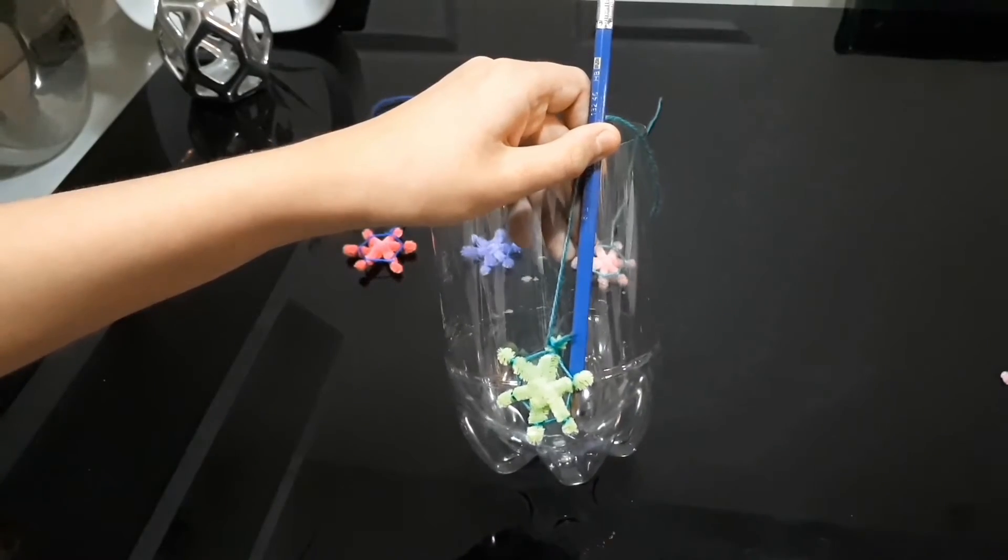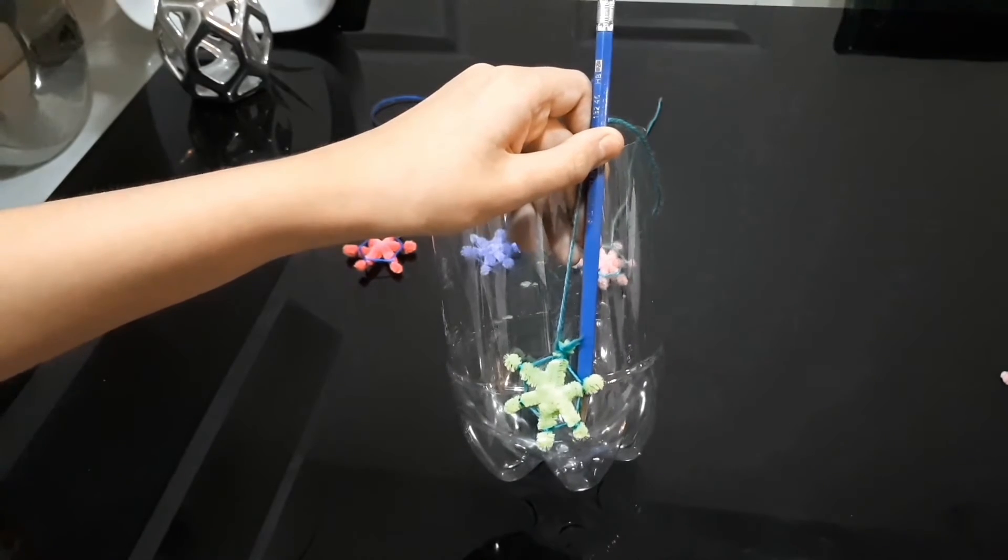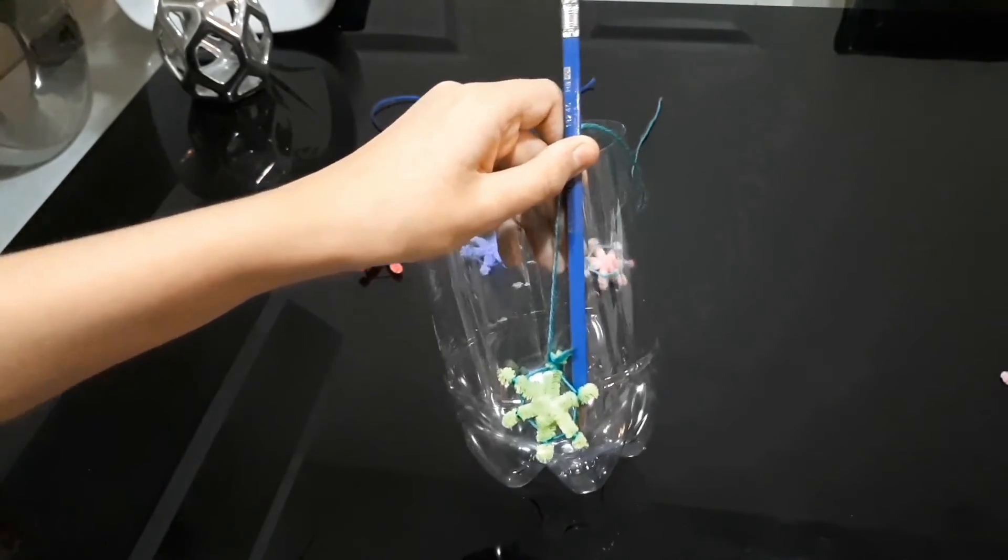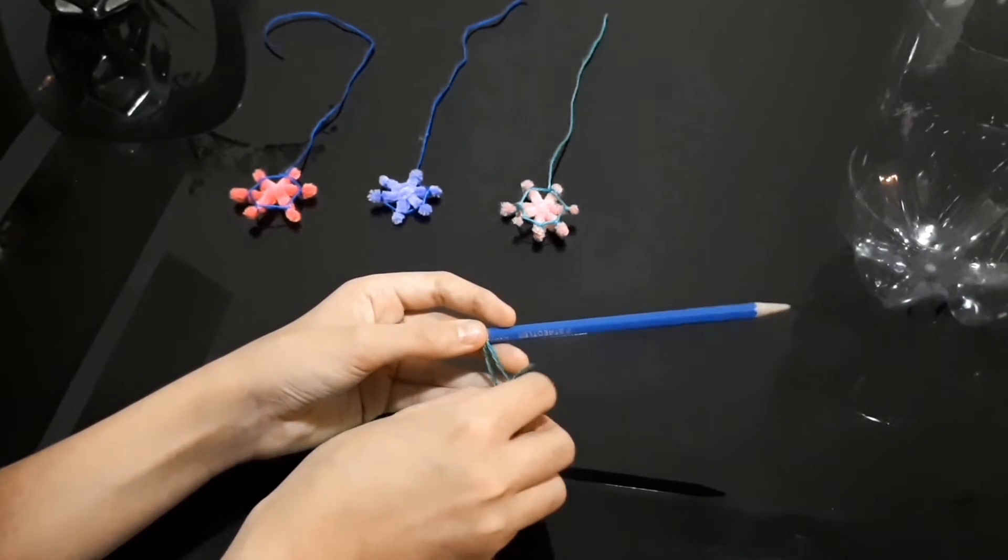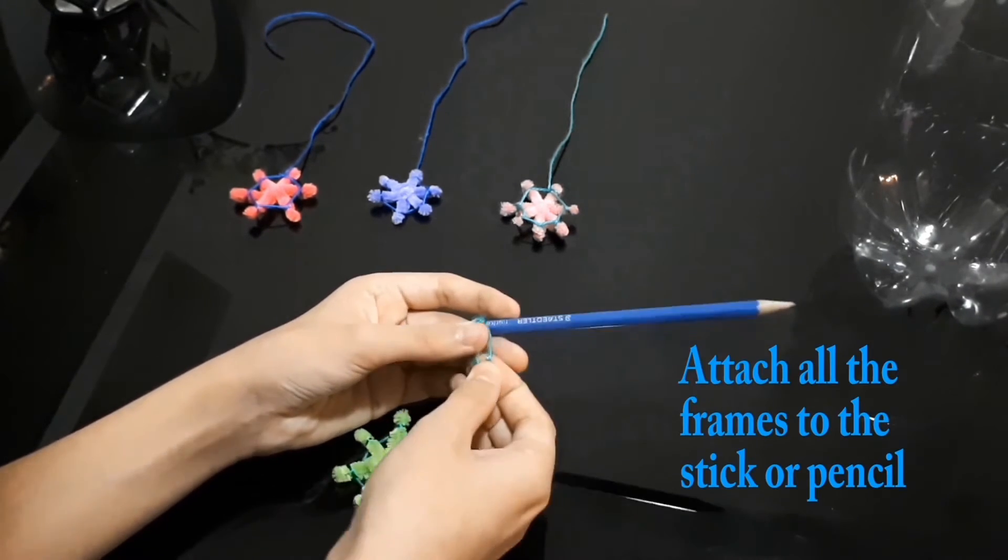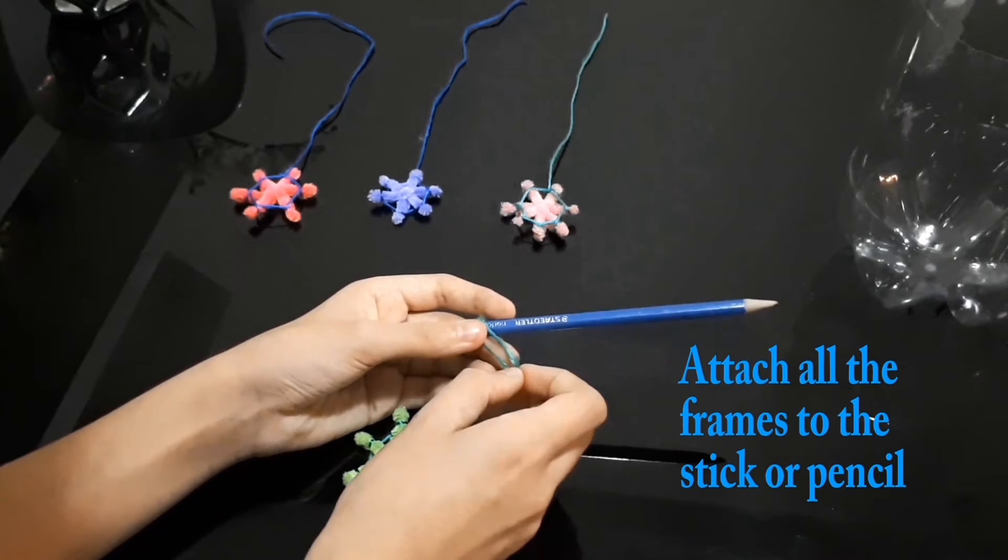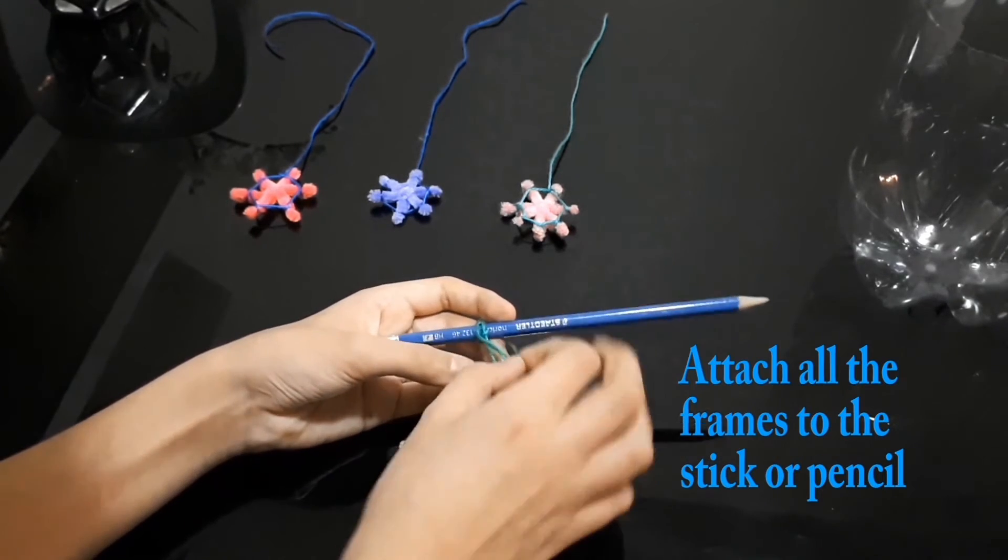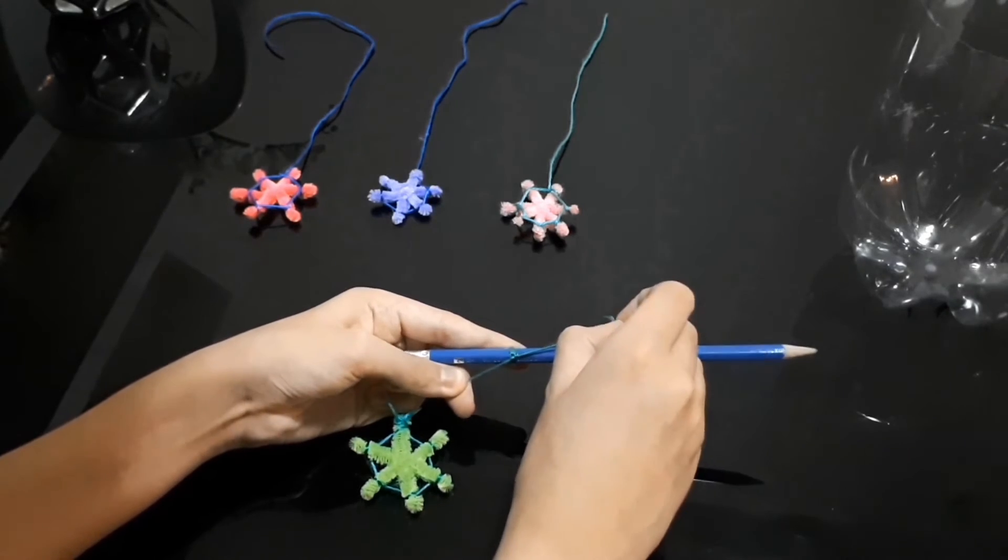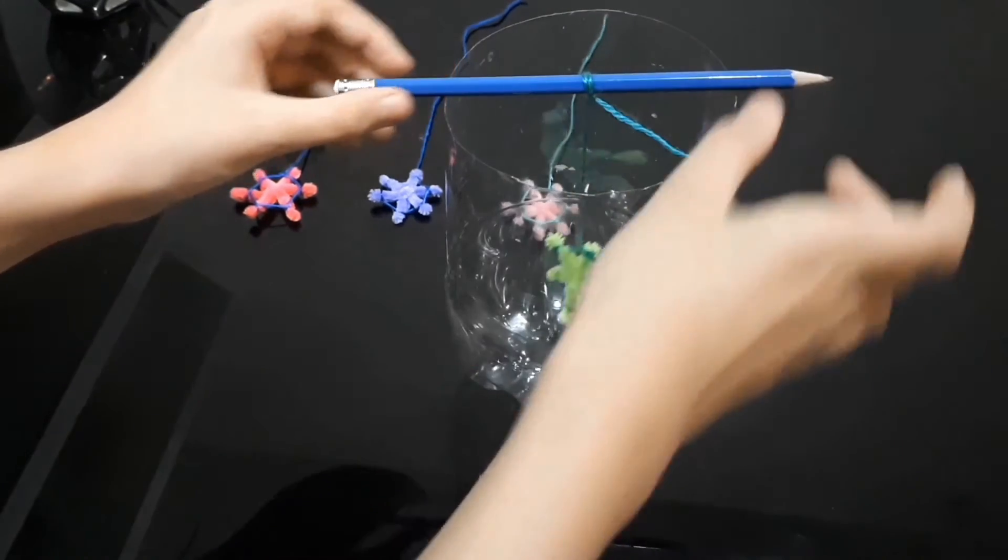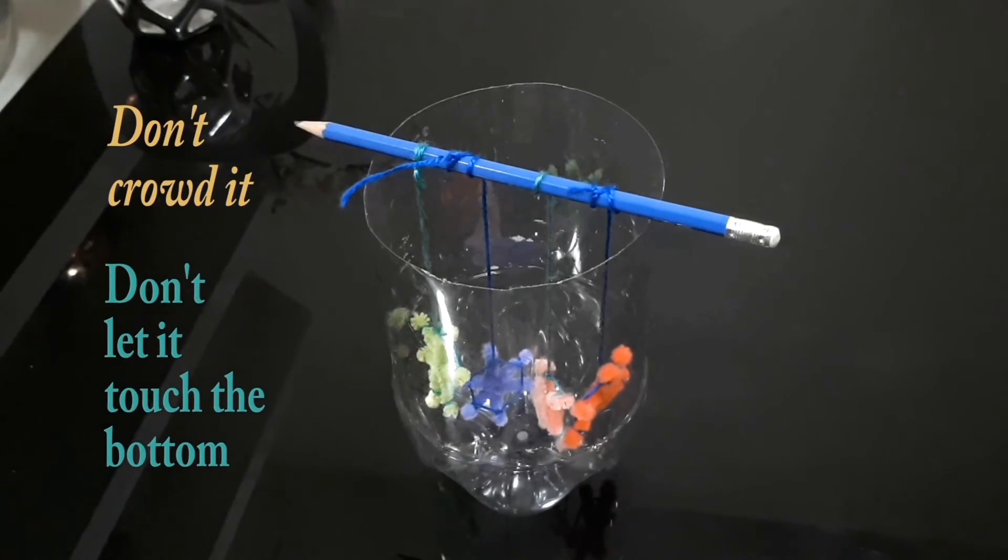Next, tie the strings onto a pencil. Make sure it doesn't touch the sides or the bottom. So, we're going to tie a knot right here. Move it up. There we go. Just perfect. It should look like this when it's done.